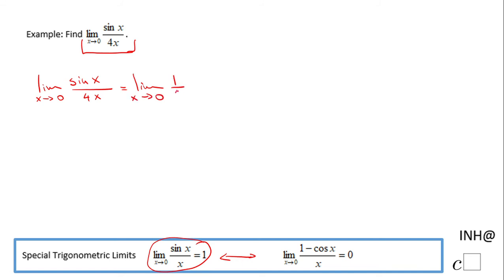1 over 4 times sine of x over x. Using the property of limits, I can pull that 1 over 4 up front in front of the limit, and then I have 1 over 4 times the limit when x approaches 0 of sine of x over x.